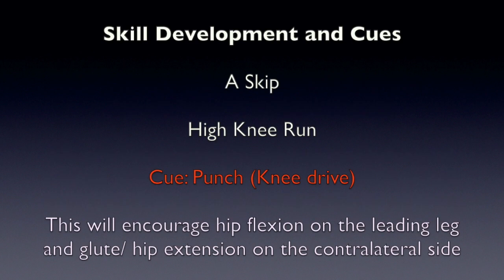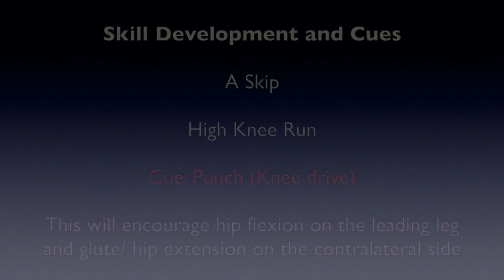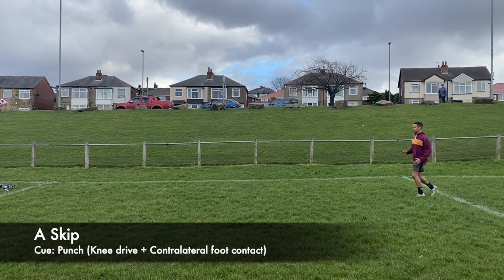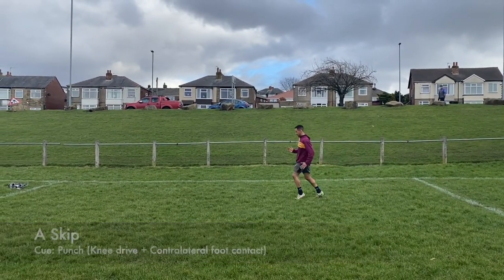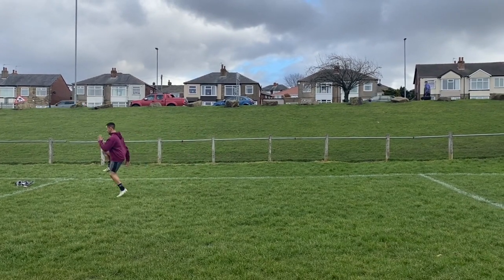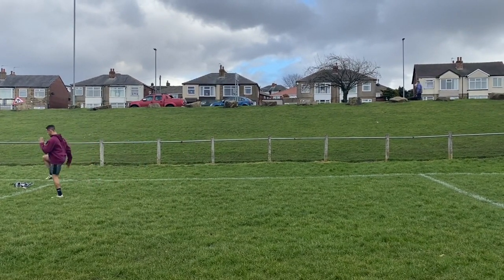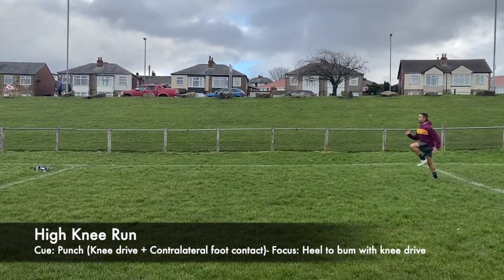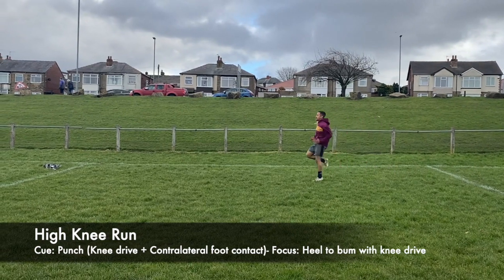In order to develop Athlete A's high speed running skill, the main focus will be knee drive. To do this I will use an A skip and high knee running, and encourage the athlete to punch the knee through. During the A skip I am looking for toes up on the leading leg, a strong knee drive and intent attacking the ground. High knee running again should emphasise strong knee drive and attacking the ground.